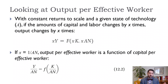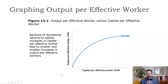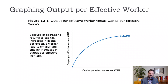Here's our production function. Output per effective worker is on the vertical axis, capital per effective worker is on the horizontal axis, and we have decreasing returns to capital per effective worker, which gives us our concave production function. We are not going to have increases in technology shift our production function now the way it did before, because we already have technology in the production function as A.